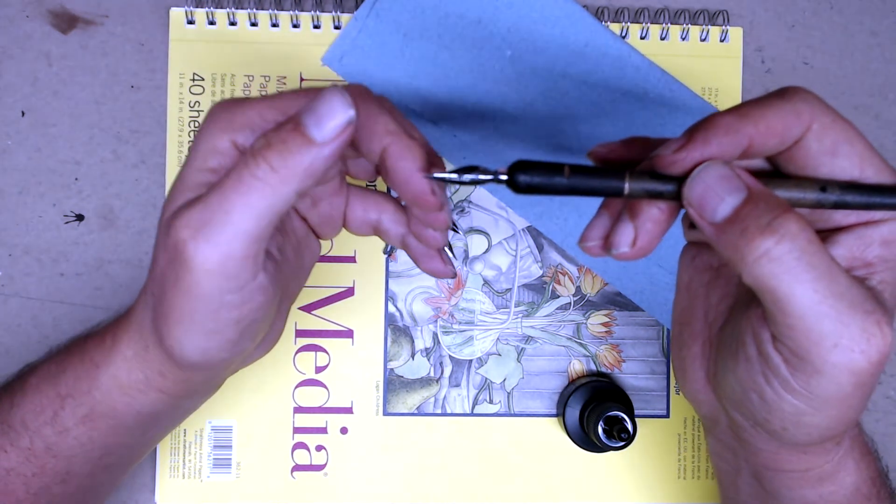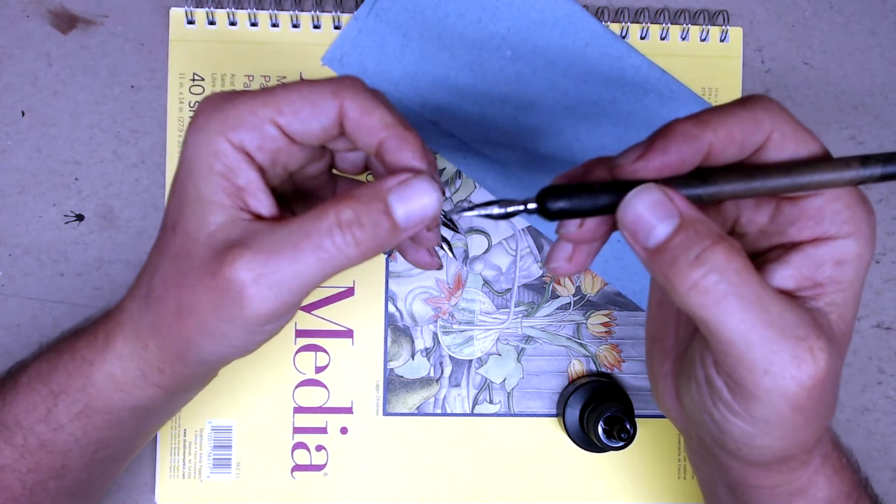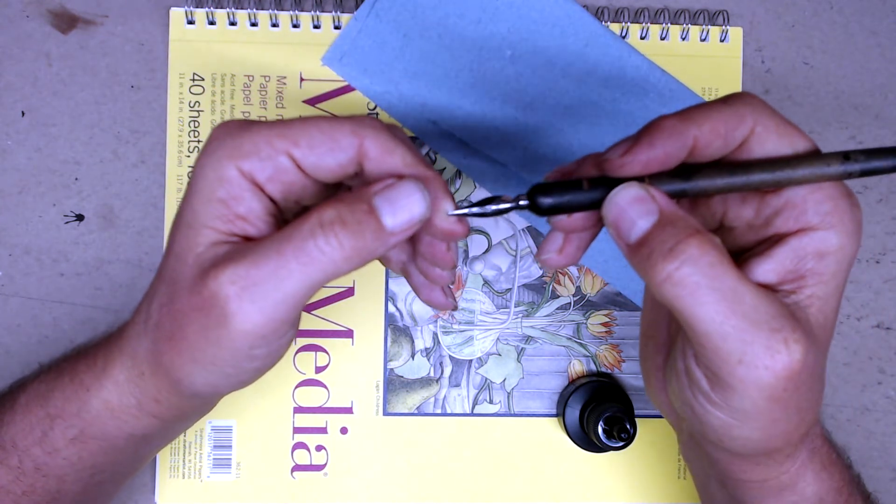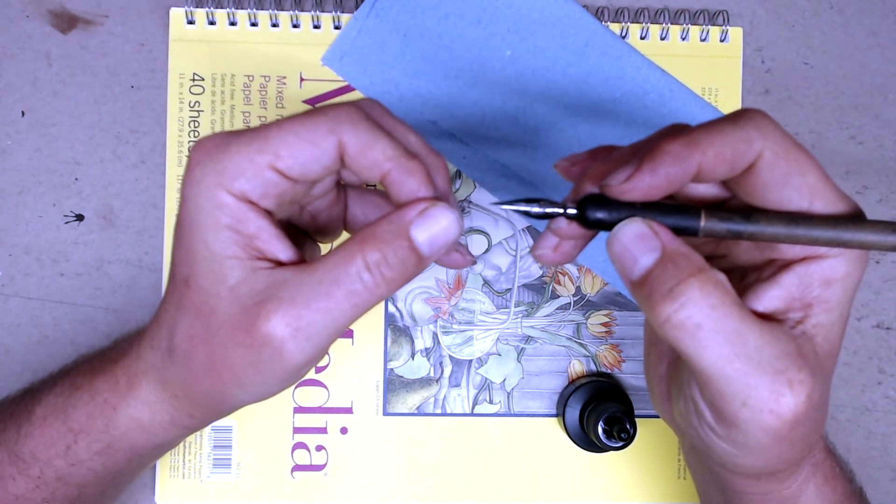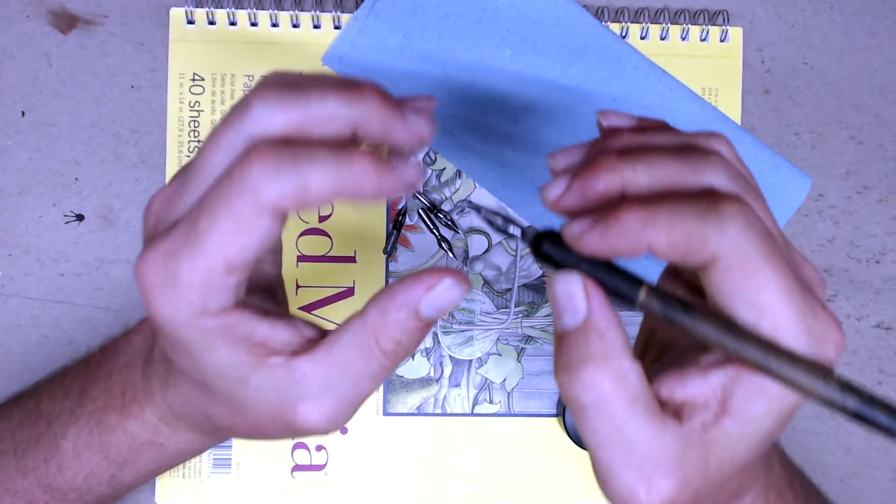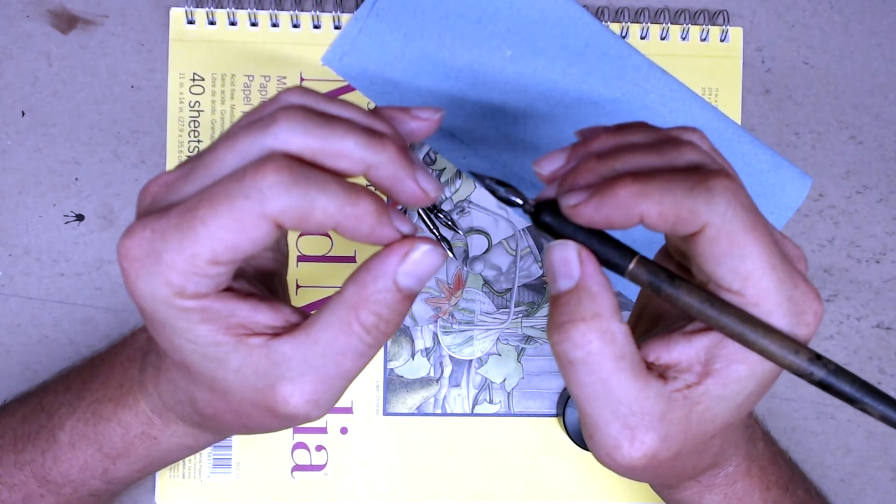And then some nibs are so delicate and so flexible that even a little bit of pressure will make the line go from thin to super, super thick. No marker or modern pen matches the dip nib. It simply reigns supreme in that respect.